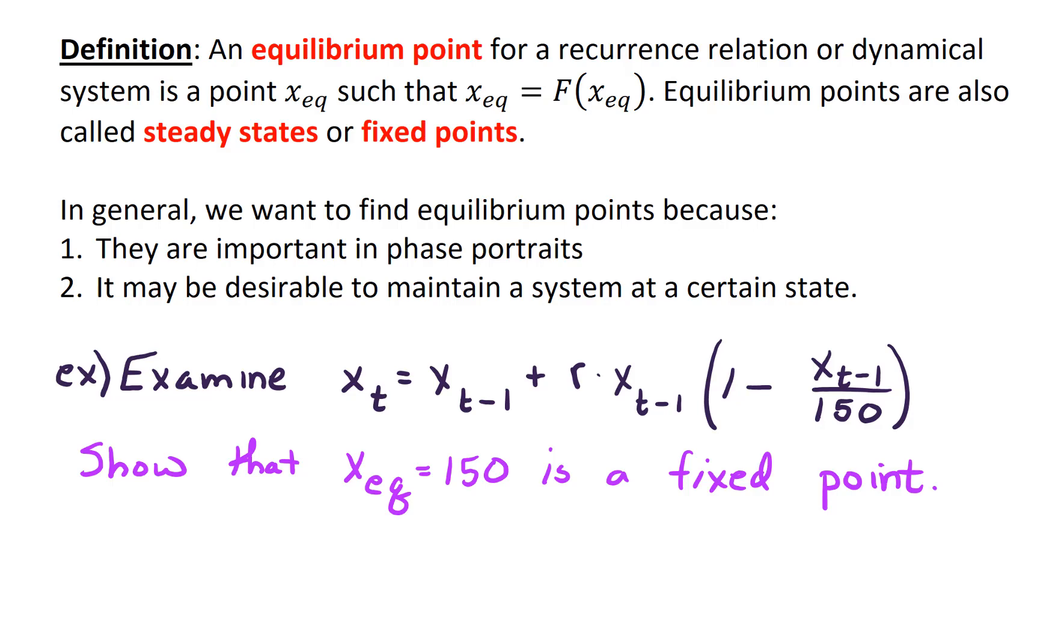Hello, in this video we're going to talk about equilibrium points and how to find them. Let's begin with a definition. An equilibrium point for a recurrence relation or dynamical system is a point, and we'll denote that point x sub eq, such that x sub eq equals capital F of x sub eq.